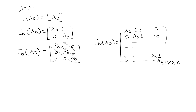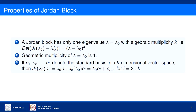For example, if someone asks you to write a Jordan block of size 2 corresponding to eigenvalue λ=3, it is written as: 3, 1 in the first row and 0, 3 in the second row. Now we will see some properties of Jordan blocks.